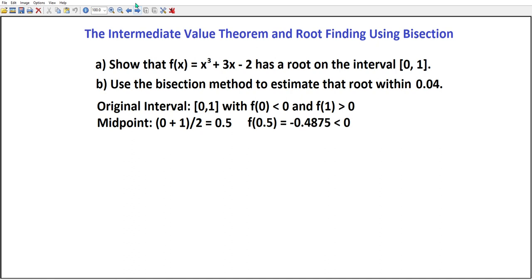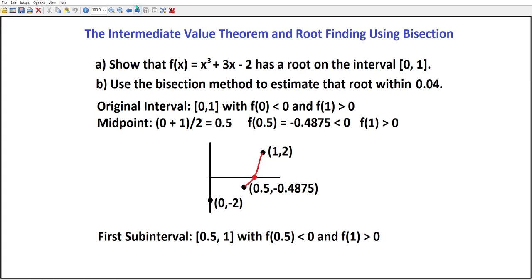We compute the function value, which turns out to be -0.4875. The only thing that's important is that's a negative number. We note that f(1) is positive, which means between 0.5 and 1 there must be a place where the function is 0. So our first subinterval is [0.5, 1], with f(0.5) < 0 and f(1) > 0.